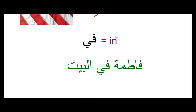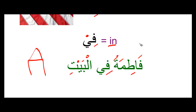The next harf is fi, and fi means 'in.' Fatimatu fi albayti — Fatima is in the house. Albayt, which we've done before, means the house. Fatima only has one dhamma because it is also an exception, and we'll talk about how it's an exception along with Amerika later on. For now, focus on how harf al-jar fi is used and its positioning in the sentence: Fatimatu fi albayti.